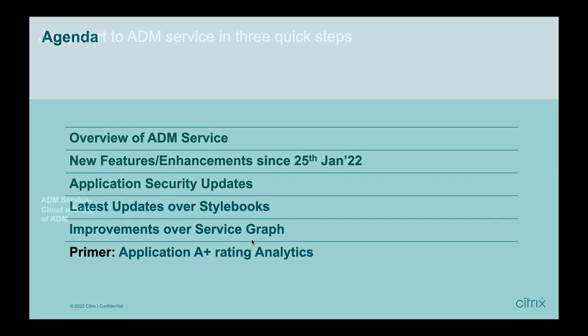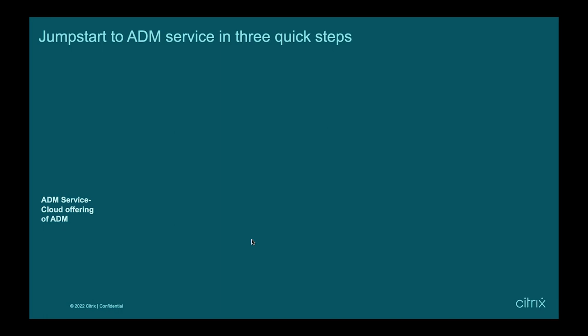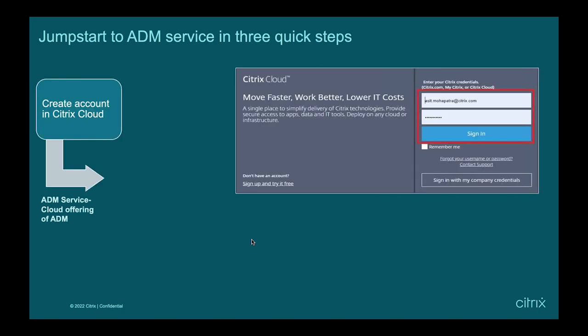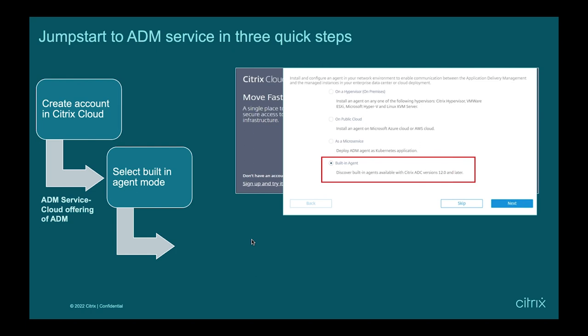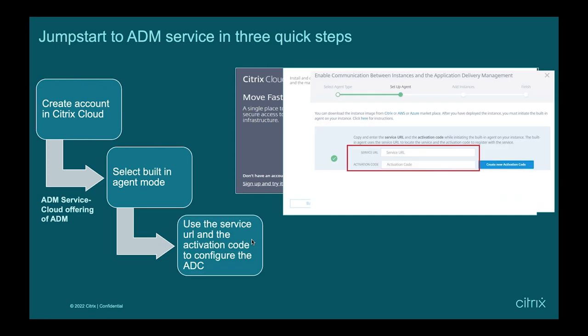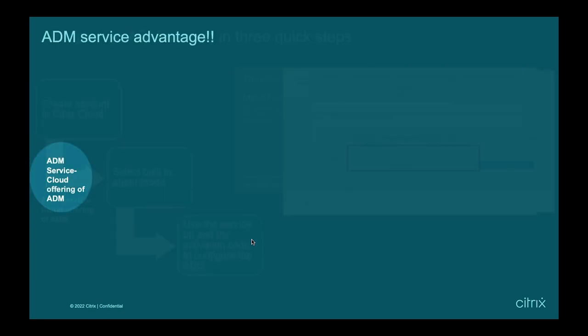Let's quickly talk about how you can jump-start with the ADM service in three quick steps. First, you need to create a Citrix Cloud account, then select the ADM service. Once selected, the second step is to choose the inbuilt agent mode to easily discover all ADCs within your infrastructure. All you have to do is use the service URL and activation code, configure it on the ADC, and your ADCs will be discovered.